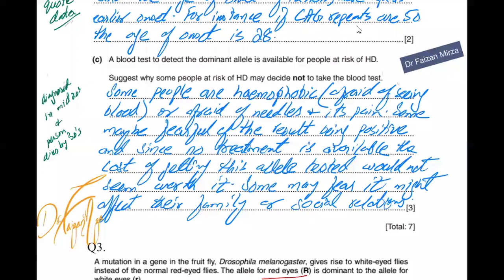The question asks why some people at risk of carrying the gene may decide not to get the blood test done. Because some people might be hemophobic — afraid of seeing blood, afraid of needles, or afraid of pain. Some people might be fearful of receiving a positive result since no treatment is available, and the cost of getting the allele tested would not seem to be worth it. Some may fear it might affect their family or social relations.